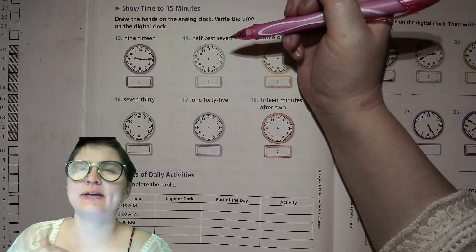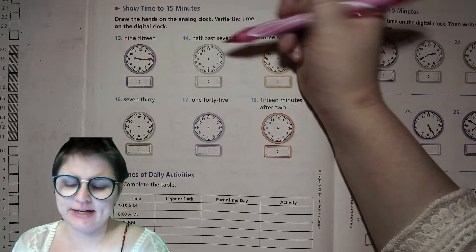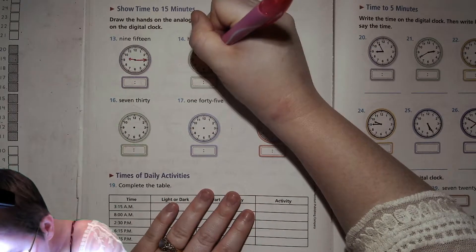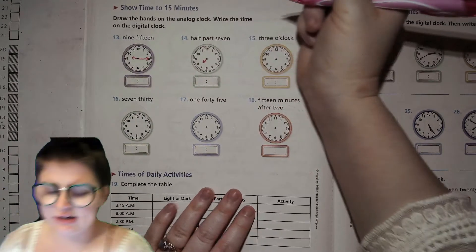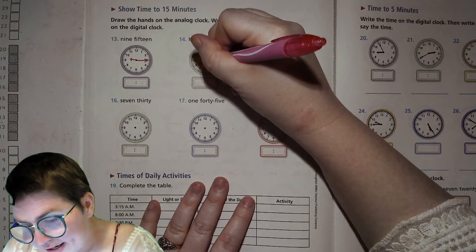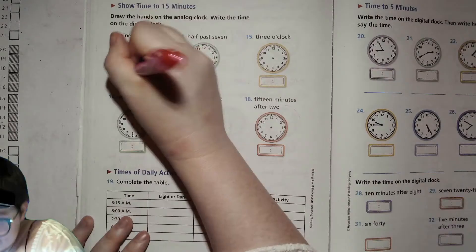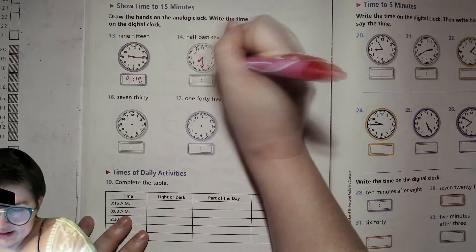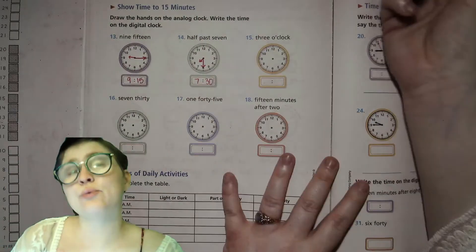Half past 7. Now think about that. That means it was 7 o'clock and now half an hour has passed since then. So it's 7:30, right? So our hour hand is actually going to be about halfway between the 7 and the 8 because it's halfway between 7 and 8 o'clock. And our minute hand is going to be pointing right at that 6 because 6 times 5 is 30. I forgot to write right here. 9:15. And then 7:30.